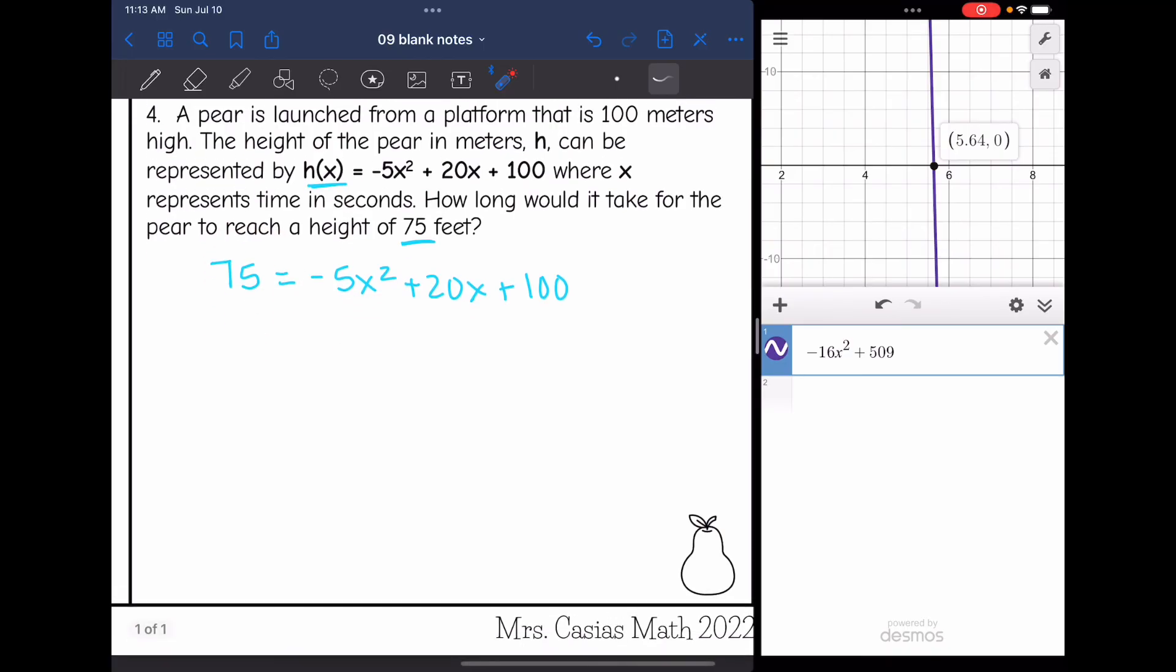We could solve this using quadratic formula, factoring, any of those methods. But I'm just going to use the graph and look for the positive zero since that's what I have pulled up. The first thing I need to do is set it equal to 0. So I'm going to subtract 75 from both sides.